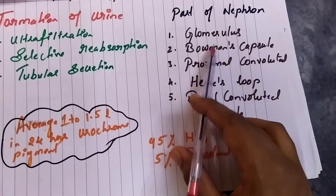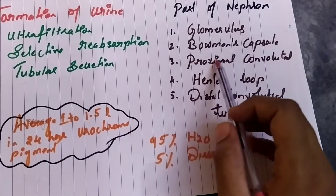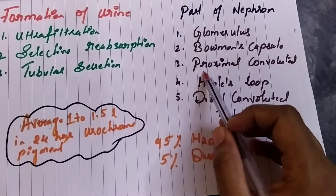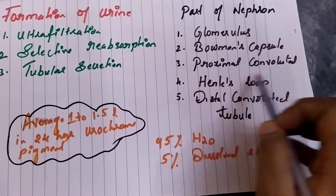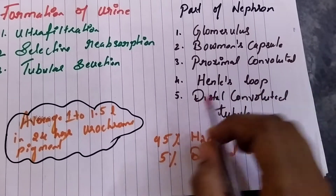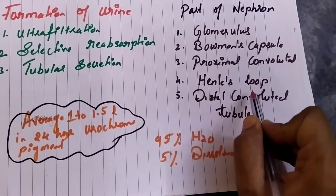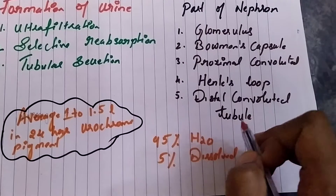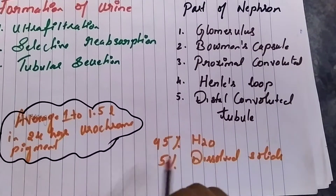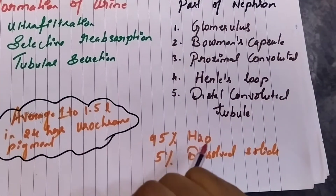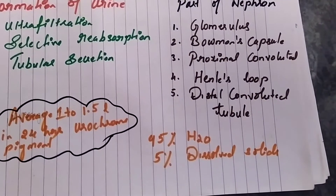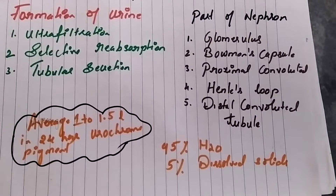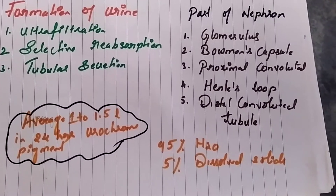The key parts of the nephron are: the glomerulus, Bowman's capsule, proximal convoluted tubule, Henle's loop, and distal convoluted tubule. Around 90 percent of the water available in our body and about 5 percent of the dissolved solid particles or substances are managed through these structures.